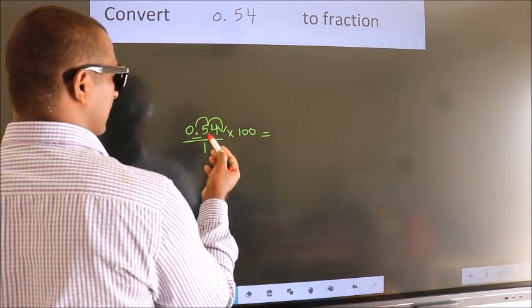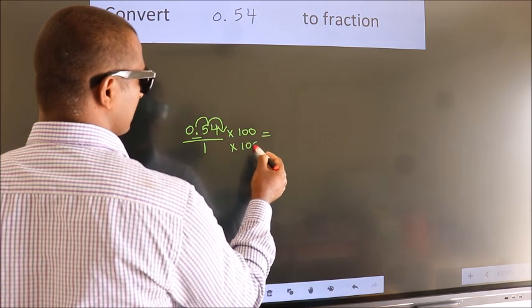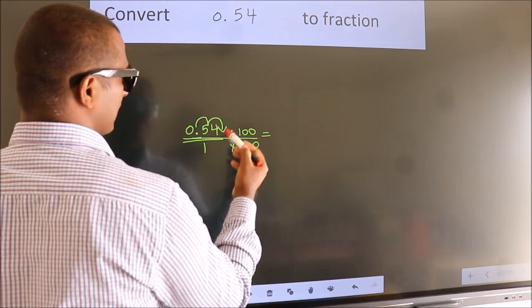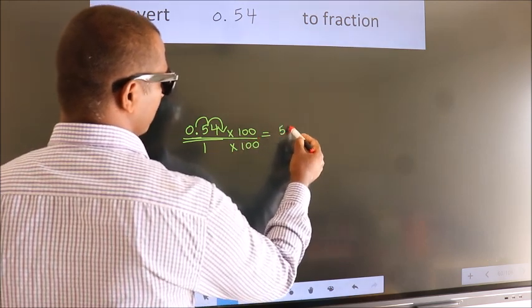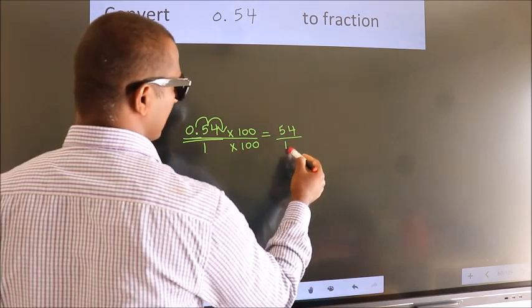Whatever you are multiplying in the numerator, in the denominator also we should multiply by the same. Next, 0.54 into 100, we get 54. In the denominator, 1 into 100 equals 100.